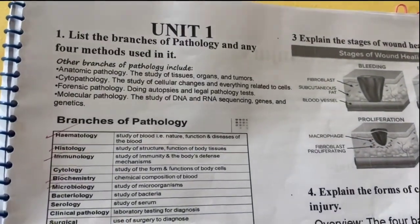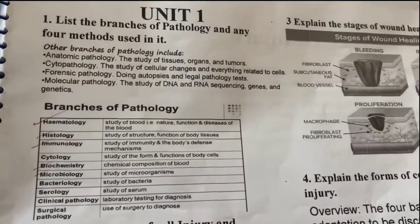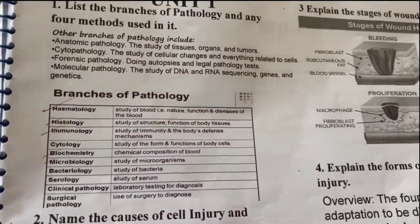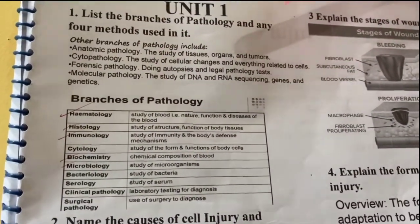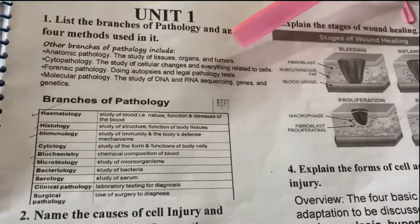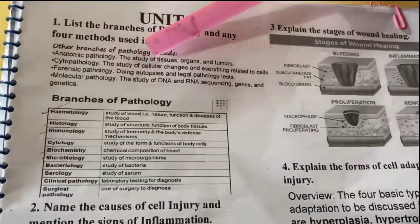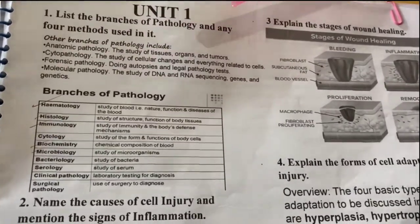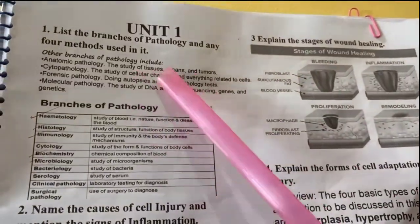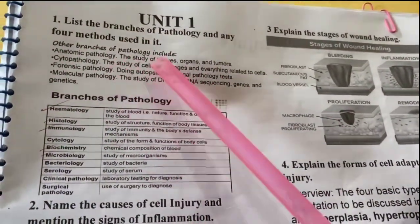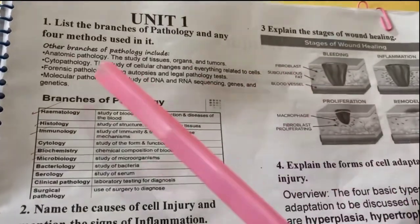There are many branches of pathology we have to know. There are anatomic pathology, cytopathology, forensic pathology, and molecular pathology. Anatomic pathology is the study of tissues, organs and tumors. Then cytopathology deals with cellular changes — cyto means cell — so cellular changes and everything related to cells will come under cytopathology.